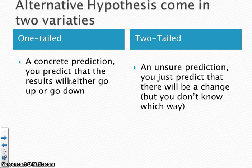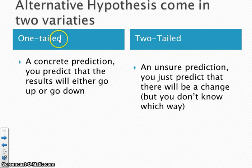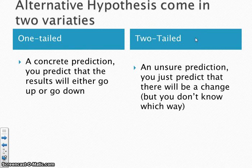Sometimes these are called directional hypotheses. A one-tailed hypothesis is a directional hypothesis, and a two-tailed is a non-directional hypothesis. A two-tailed hypothesis is when we just say there will be a difference — for example, there will be a difference in results between students who listen to music and those who don't when revising. You're not saying who's going to do better or worse, just that there will be a difference; you're not being directional.